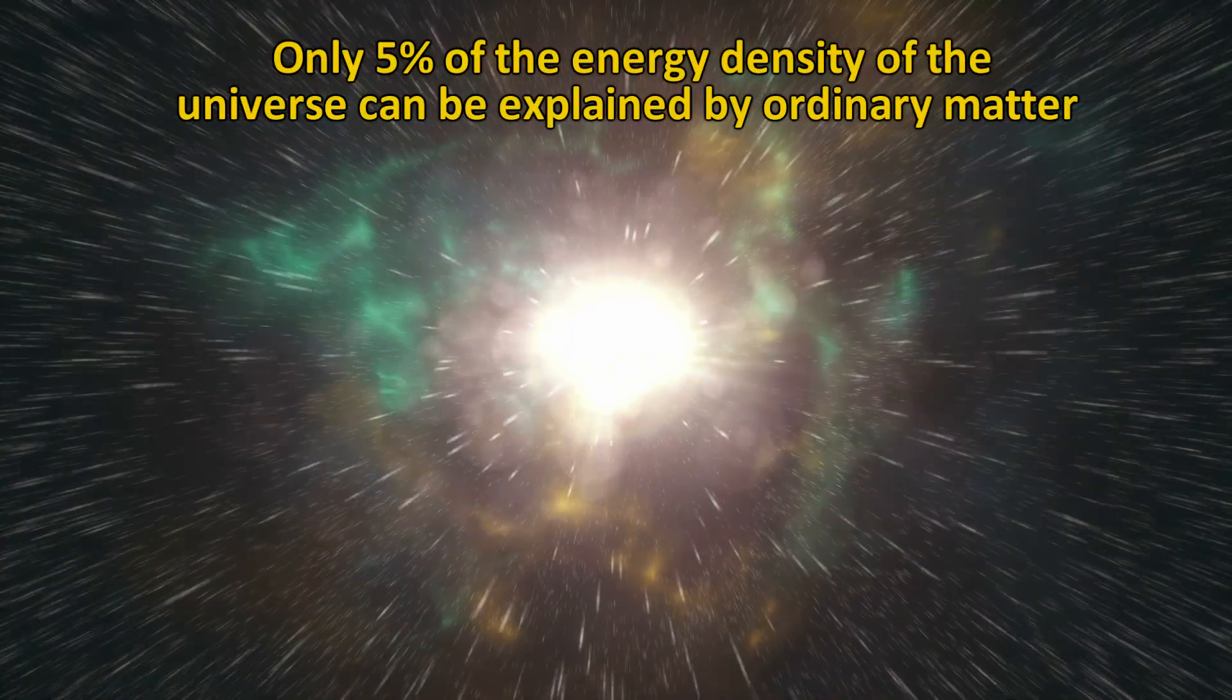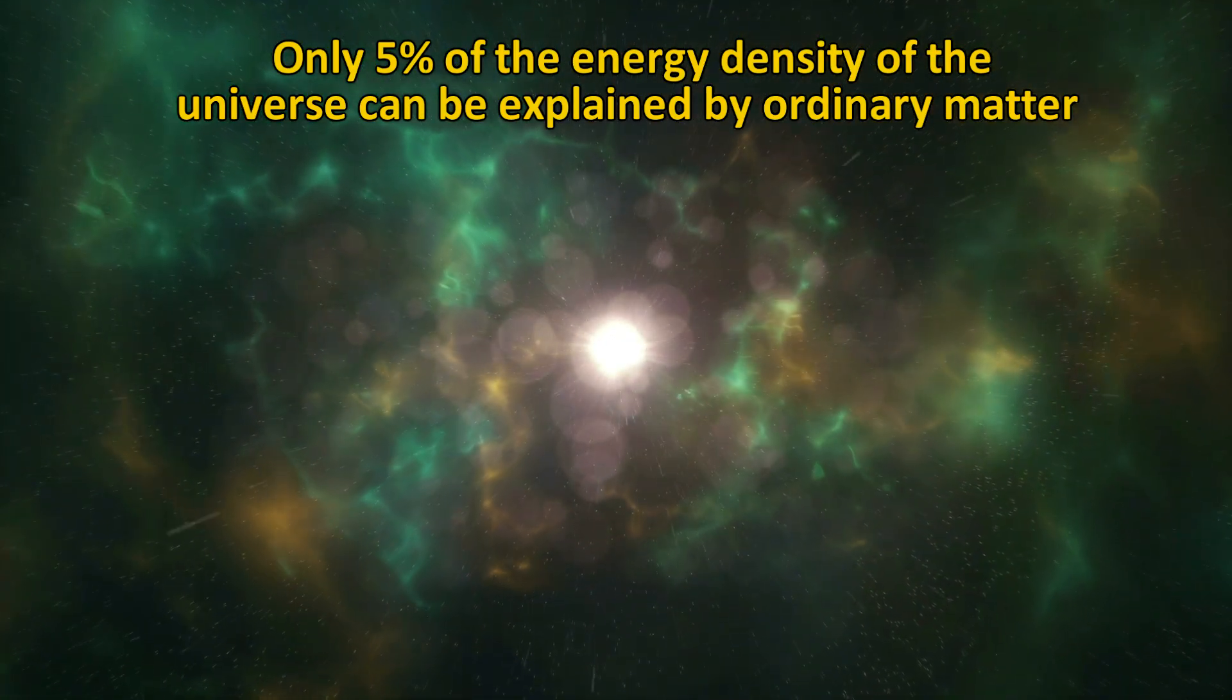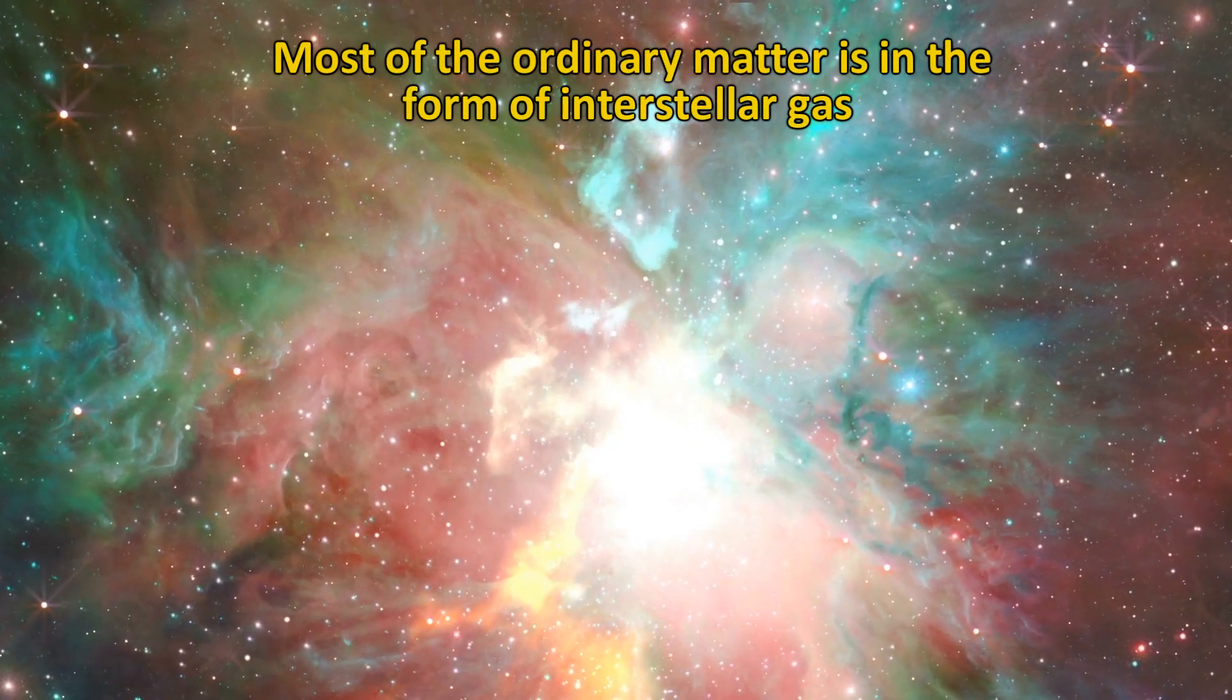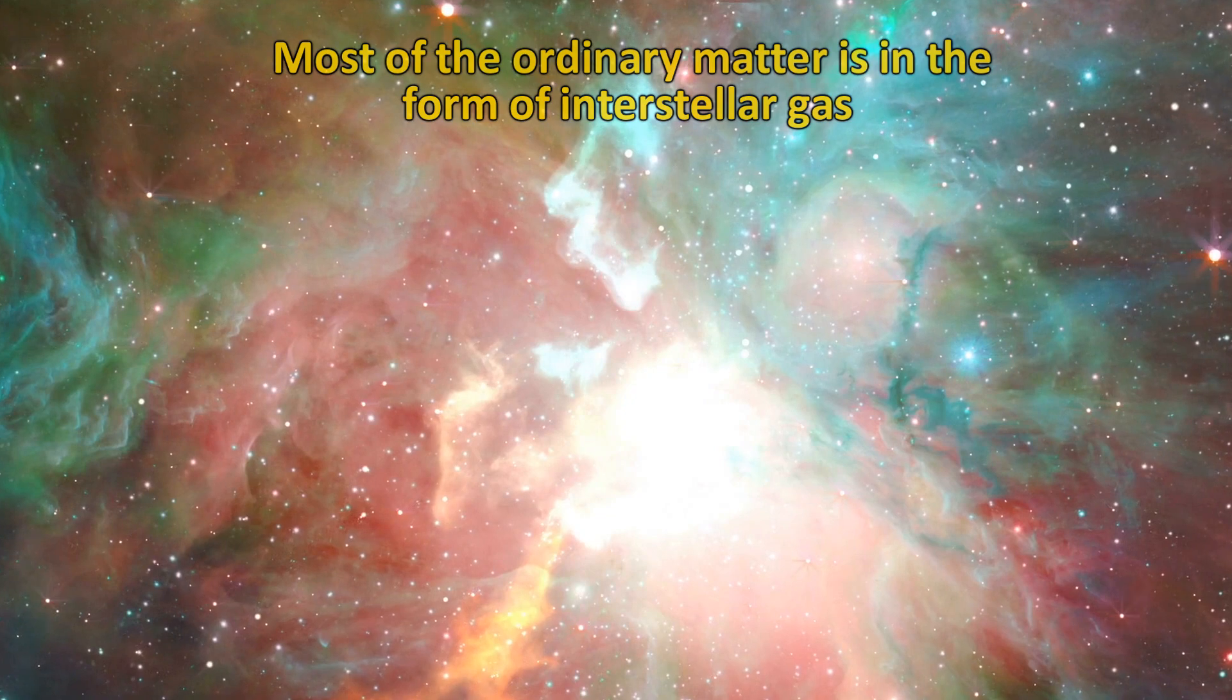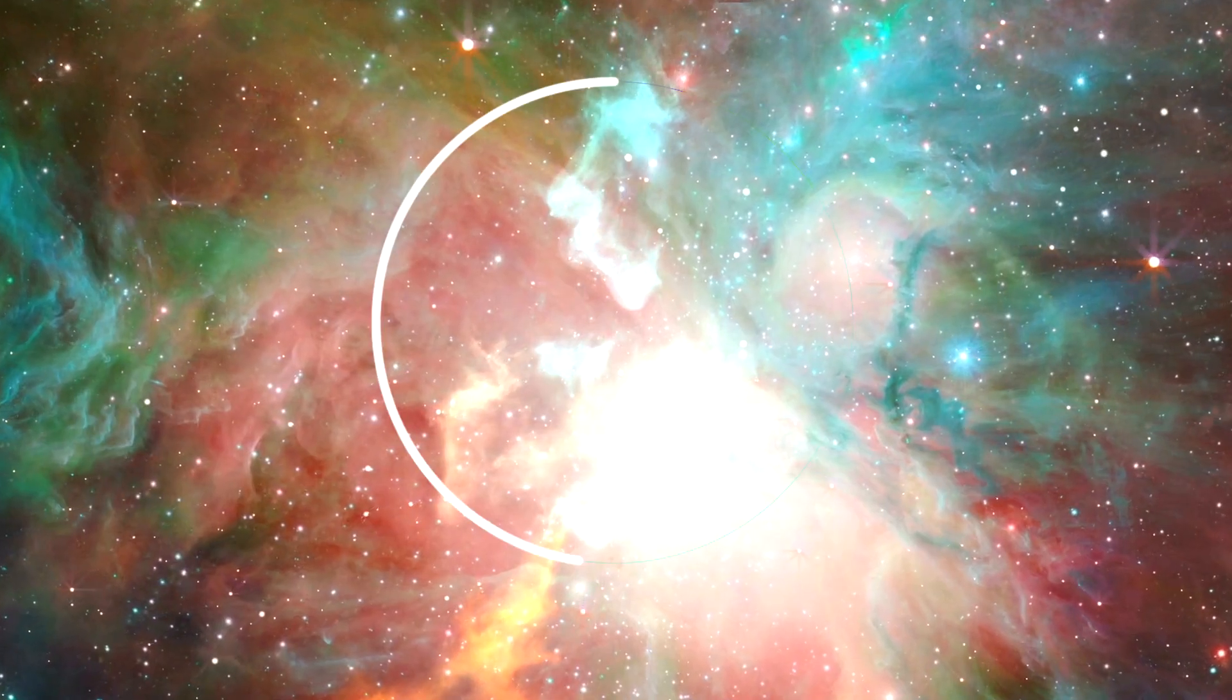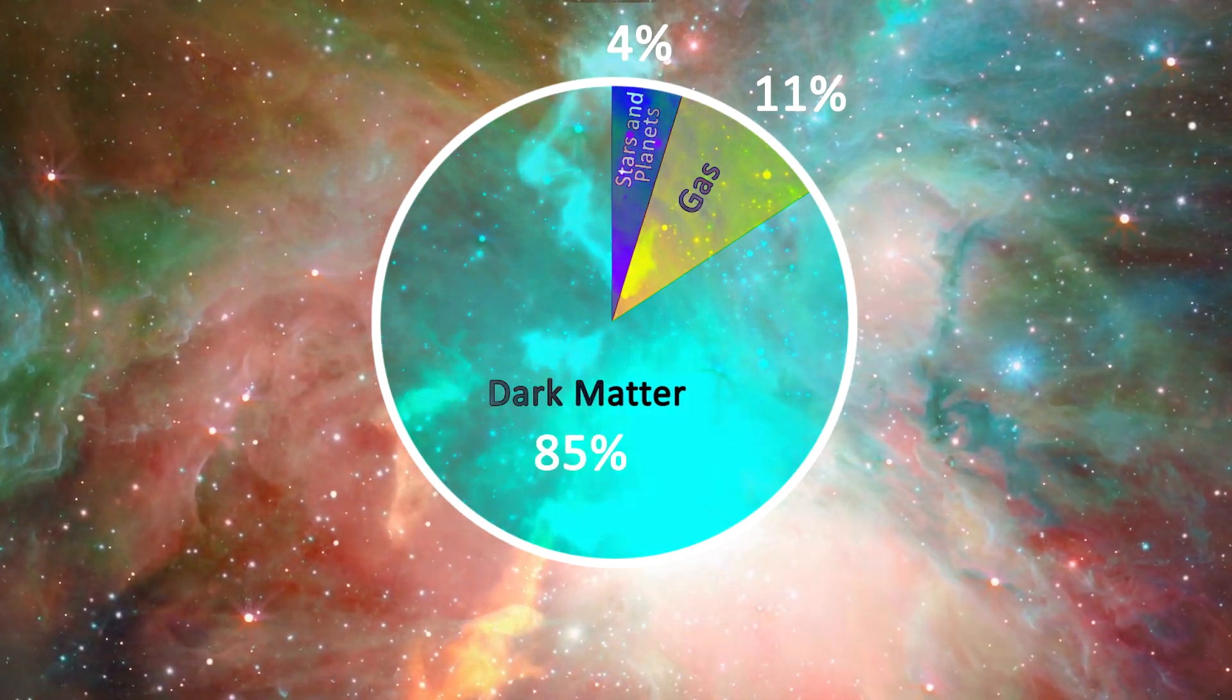In addition, there are other more technical reasons having to do with the rate at which new elements were formed in the early universe, which indicate that only about 5% of the energy density of the universe can be explained by ordinary matter. The rest has to be dark matter and dark energy. By the way, most of the ordinary matter in galaxies is not in the form of stars and planets, but interstellar gases. If you added up all the mass of this gas, it would be about three times as much as the mass of all the stars and planets of the universe put together. So a pie chart of the mass of the universe looks like this: 4% stars and planets, 11% gas, and 85% dark matter.